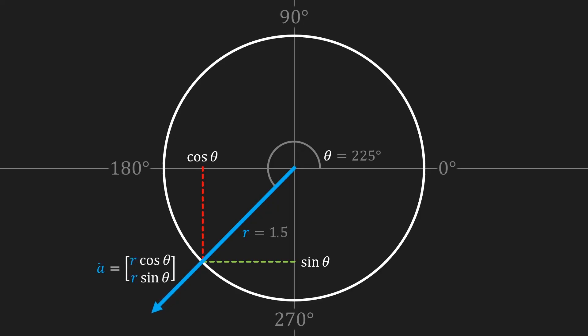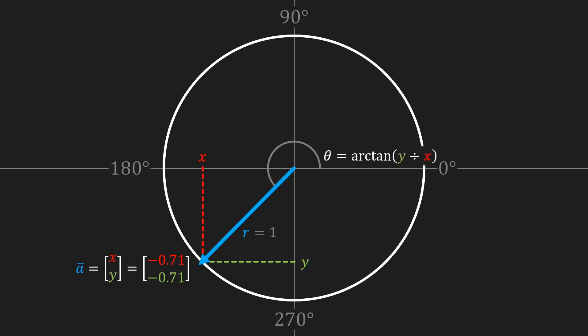Now the question is: can we also do the opposite? Given a direction vector, can we calculate the angle? As we saw earlier, given that we know the x and y components we can use the arctangent to calculate the angle theta. In this case y divided by x is equal to 1, so we need to calculate the arctangent of 1. However, the arc functions only return one of the two possible solutions. In fact the arctangent of 1 would return a vector at a 45-degree angle, which is of course not the correct one. That is why some calculators and programming languages provide an additional function called atan2, which takes in the x and y components separately and can use that information to calculate the correct vector.